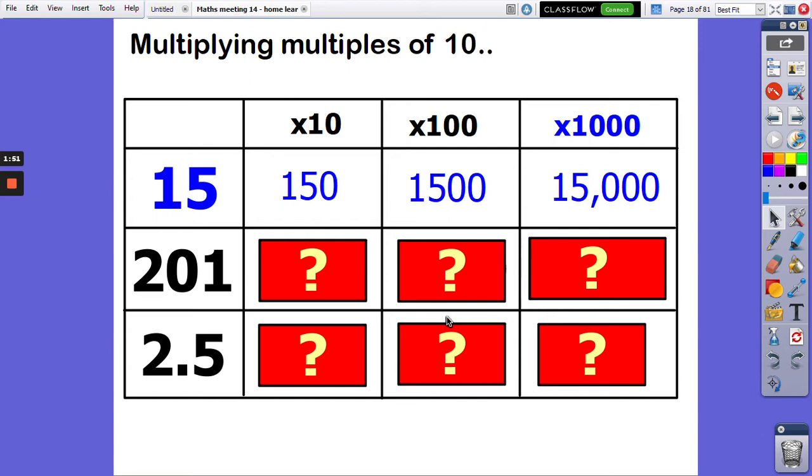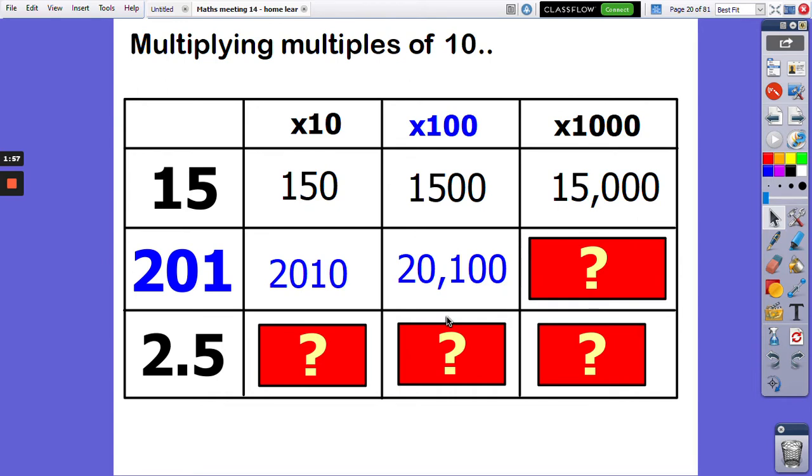201 now. 201 times 10 is 2,010. 201 times 100 is 20,100. And 201 times 1000 is 201,000. Well done if you've got those three.